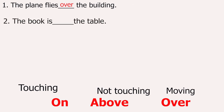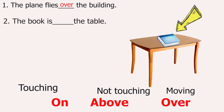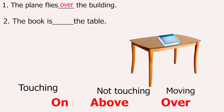The book is ___ the table. Because the book is on the table, touching the table, so we use 'on the table'. The book is on the table.